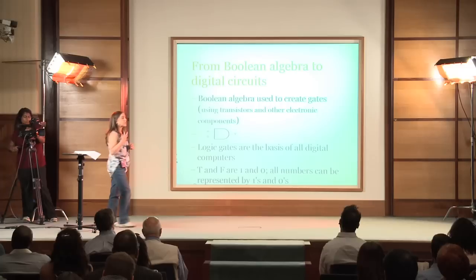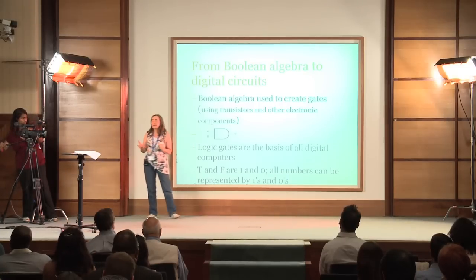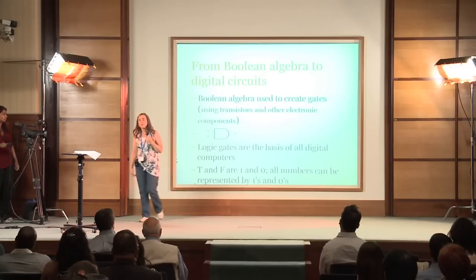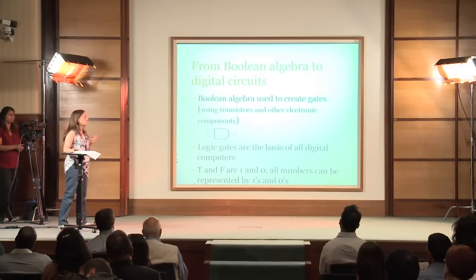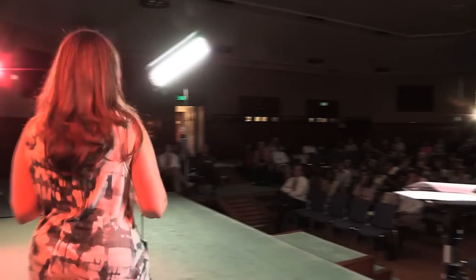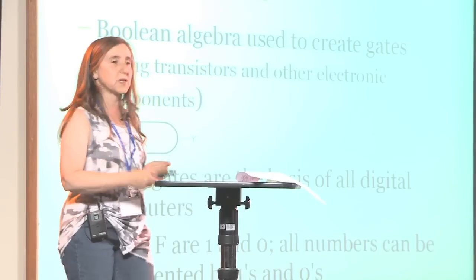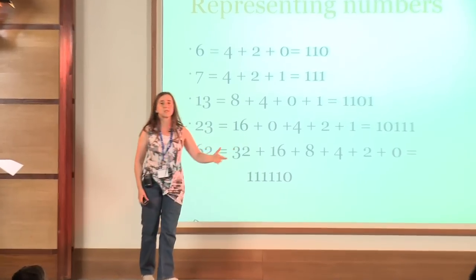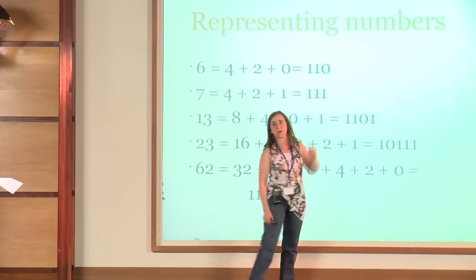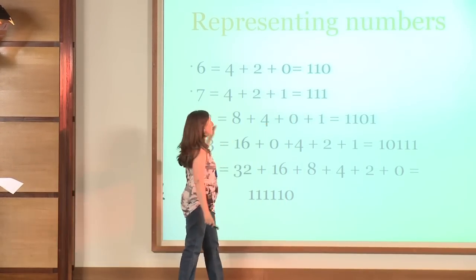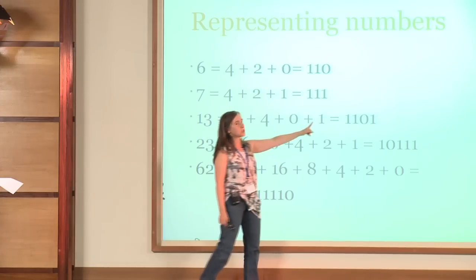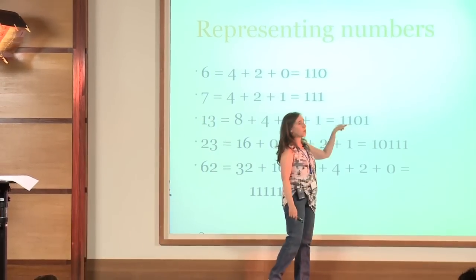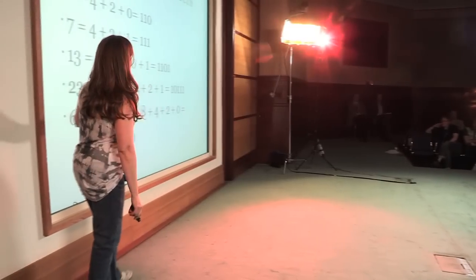People started using Boolean algebra to create gates made out of electronic components and transistors — that's an example of an AND gate. They started using logic gates connected together to make digital computers. True and false are one and zero, and all numbers can be represented by ones and zeros. For example, the number six in binary is 110, seven is 111, thirteen is 1101. You count how many ones, twos, fours, eights there are — either one or zero of each — and that's how you convert from a number to its binary representation.